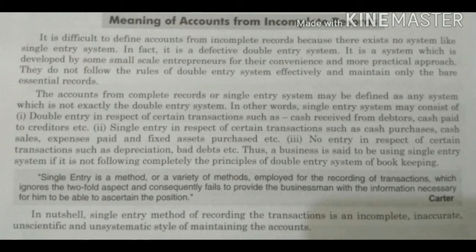ये बिल्कुल नहीं है कि इसमें हम double entry का कुछ भी ध्यान नहीं रखते। हम बहुत nominal सा double entry का concept follow करते हैं — जैसे debtors ने कितना cash दिया, creditors को कितना cash pay किया, कितनी cash purchases हुई, कितनी cash sales हुई, कितने खर्चे हुए, कितनी fixed assets purchase की। बट single entry system में हम सिर्फ cash और personal account के बारे में ध्यान रखते हैं — कितना पैसा आया, कितना पैसा गया। कोई भी adjustment नहीं होती।